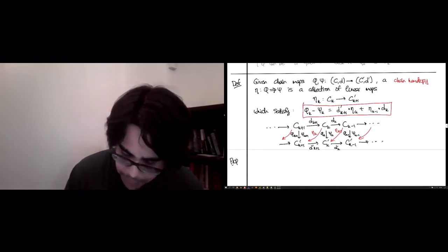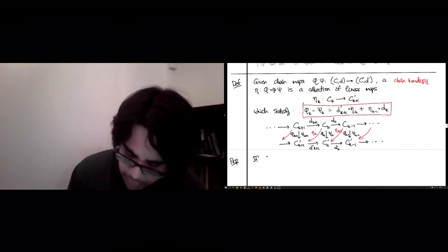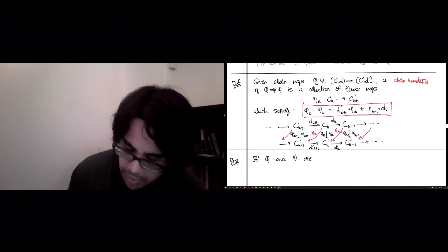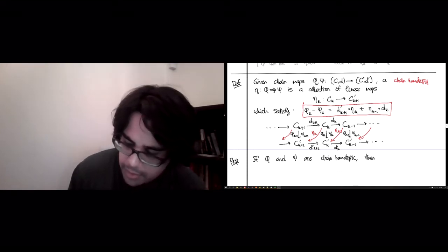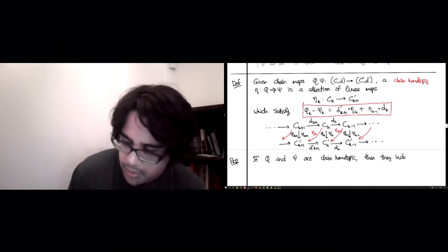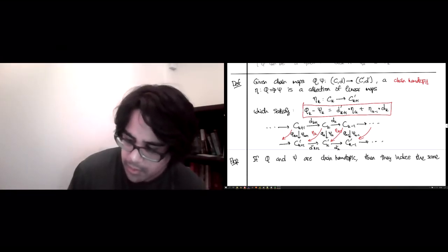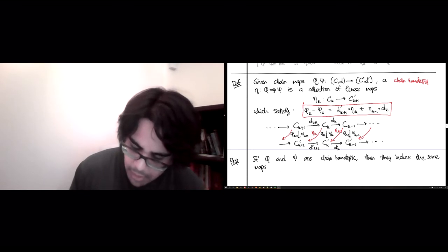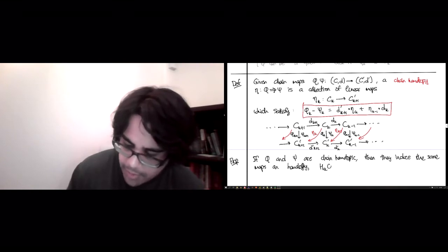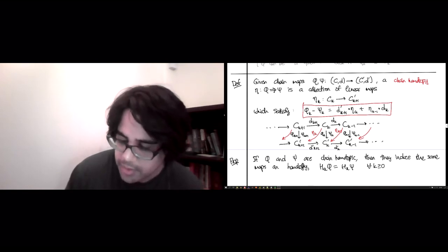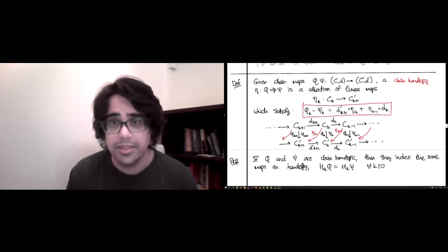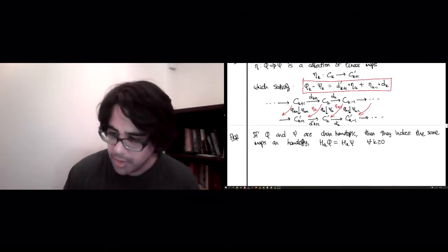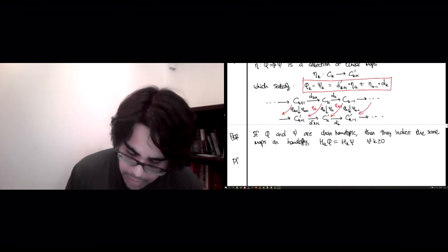So here's the proposition. If phi and psi are chain homotopic, then they induce the same maps on homology, which is to say that H_K(phi) is going to completely coincide with H_K(psi) for all dimensions K bigger than zero. And this is as linear maps going between the K-th homology of (C,D) and the K-th homology of (C',D').